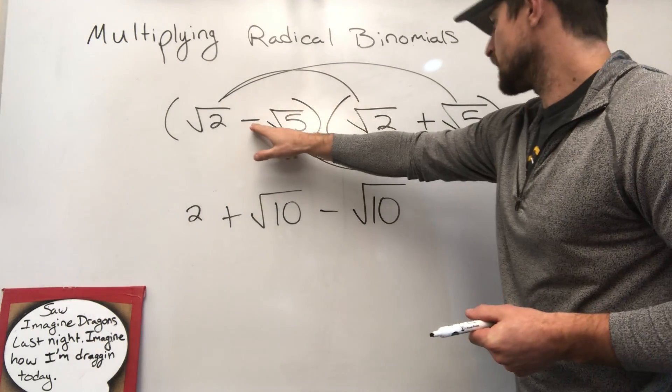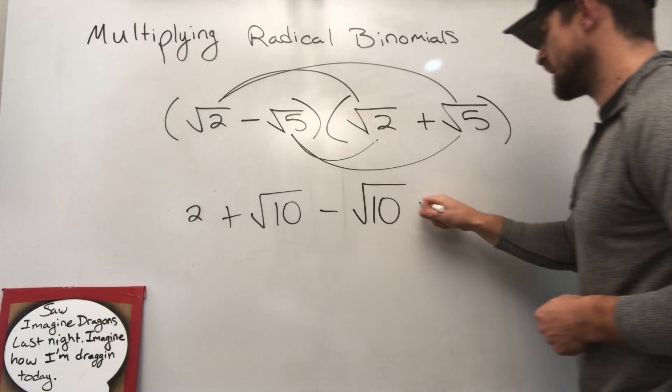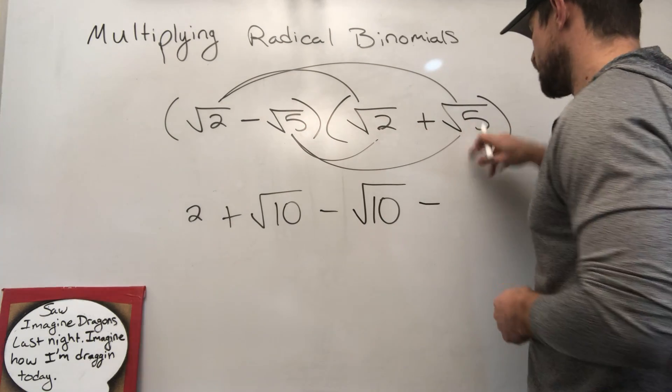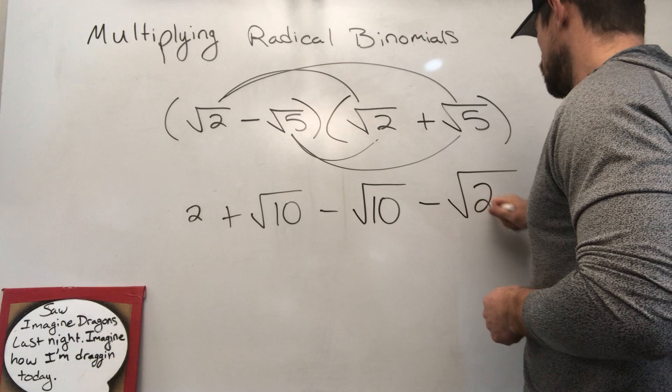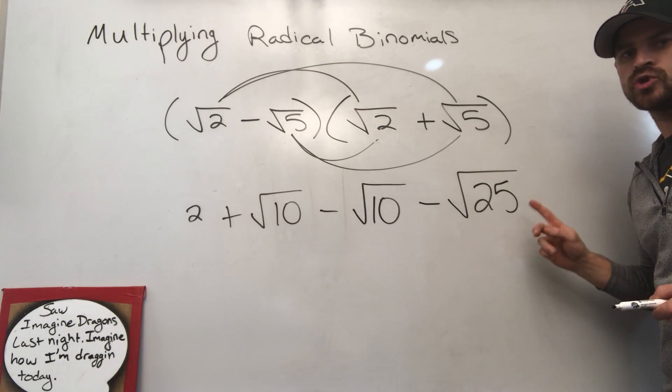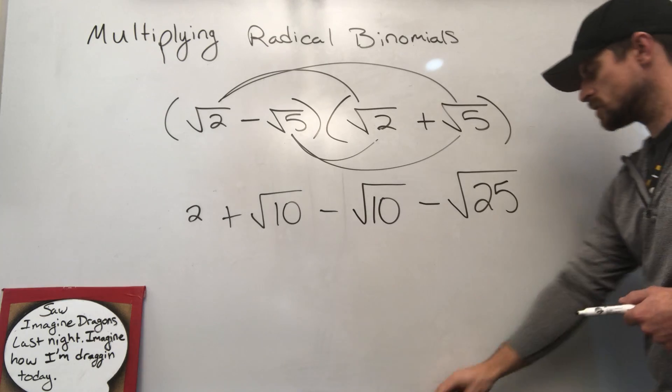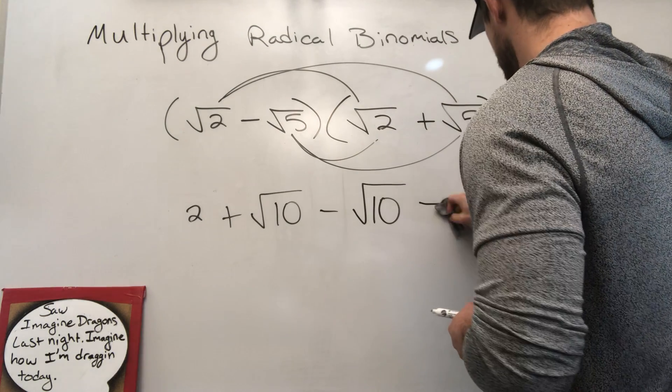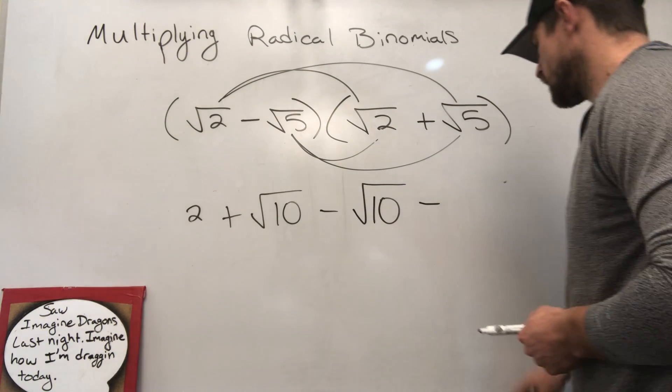And last but not least, a negative times a positive is a negative. 5 times 5 is 25. This is a perfect square, so I'm just going to change the square root of 25 into a 5.